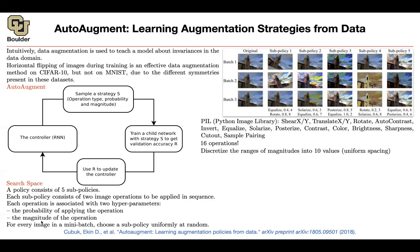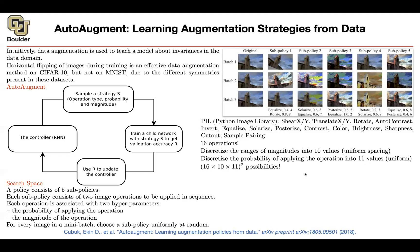There is a problem: the magnitude of these operations is a continuous variable, so we want to discretize it. You put a uniform spacing grid with 10 points, so the magnitude is a number from 1 to 10. You also discretize the probability into 11 values, from 0 up to 1. In total, for a sub-policy you're going to have 16 times 10 times 11, to the power of 2 because you have two operations per sub-policy. And since you have five sub-policies, it's 5 times 2, giving 10 to the power of 32 total number of policies. That's why you need the controller — this is a combinatorially huge space to explore.